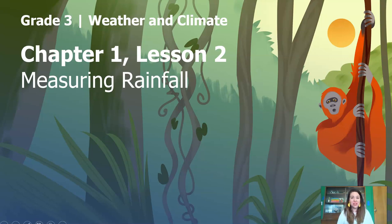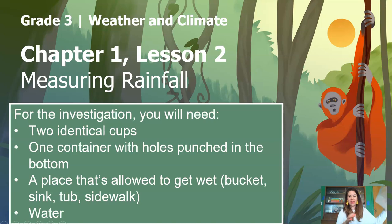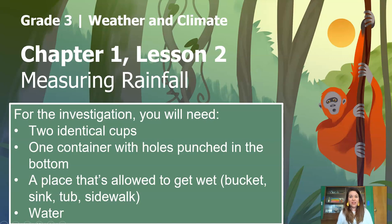This lesson includes an investigation, and if you want to do the investigation along with me, you're going to need some materials. Here's what you'll need: two identical cups, one container with holes punched in the bottom, a place that's allowed to get wet — like, I'm going to use this bucket, but you can use your kitchen sink, bathtub, or even the sidewalk. And you're also going to need some water. If you're watching this online, you can pause it and get those materials now.